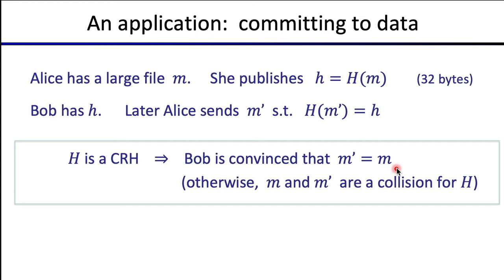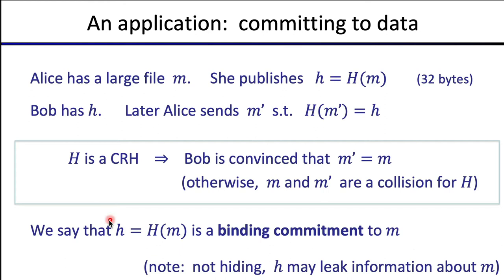If Alice publishes a collision resistant hash of her message M, that little hash value h commits her to M. The only way she can find an M prime that maps to little h is if M prime equals M. We say this is a binding commitment to the message M, because once Alice publishes little h, she can no longer change her mind. One thing to note: this commitment is not a hiding commitment, since the hash of M might leak information about M. It's binding but not hiding.